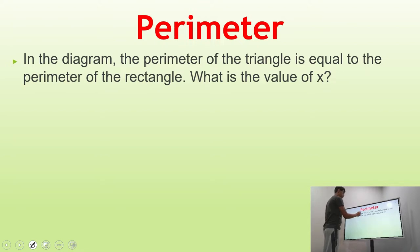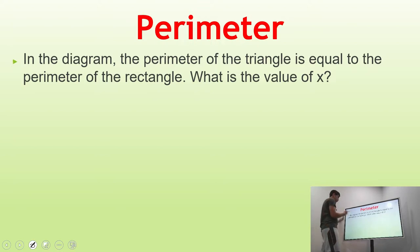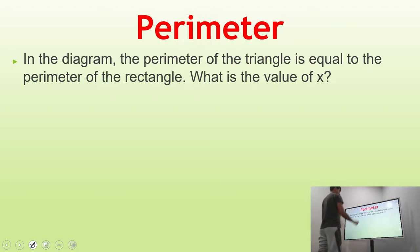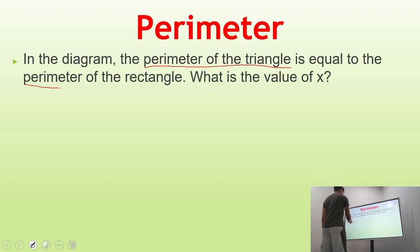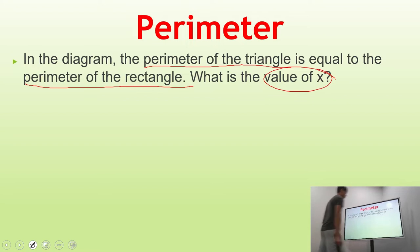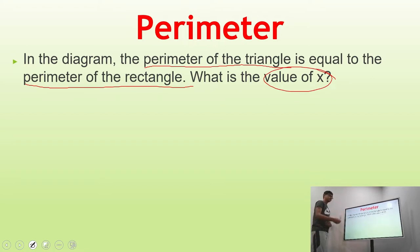Our question reads: in the diagram, the perimeter of the triangle is equal to the perimeter of the rectangle. What is the value of X? The important keywords we can pick out are that the perimeter of the triangle is equal to the perimeter of the rectangle, and we need to find the value of X.